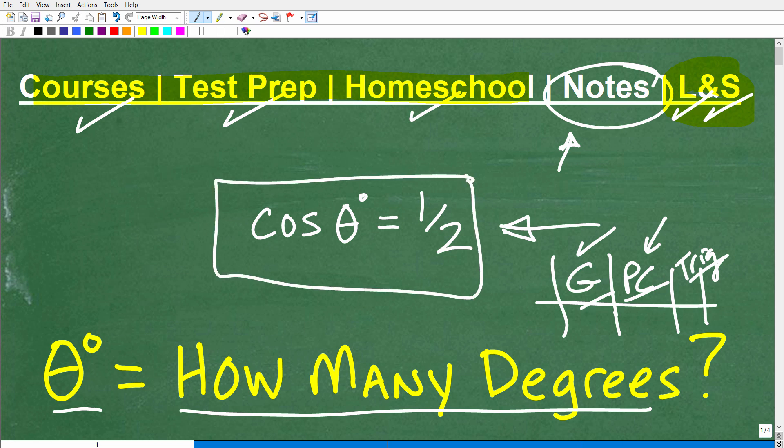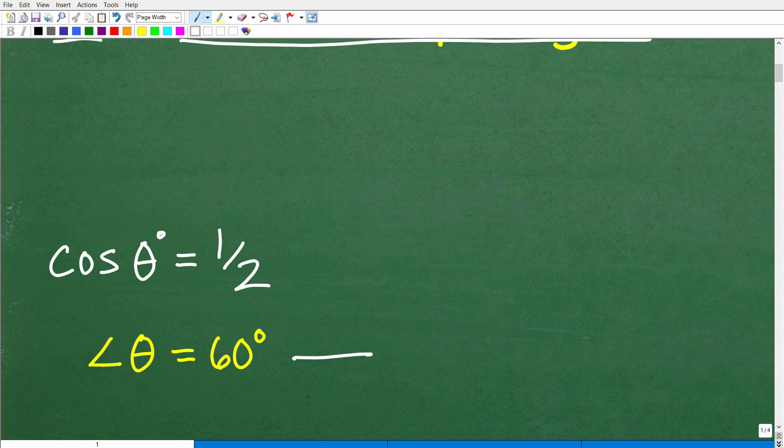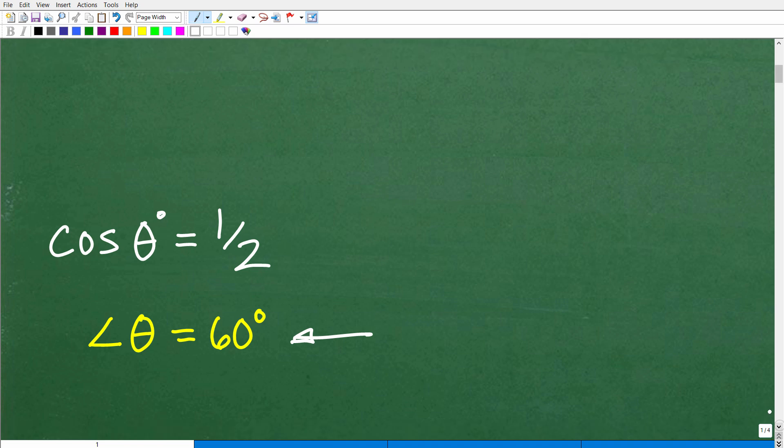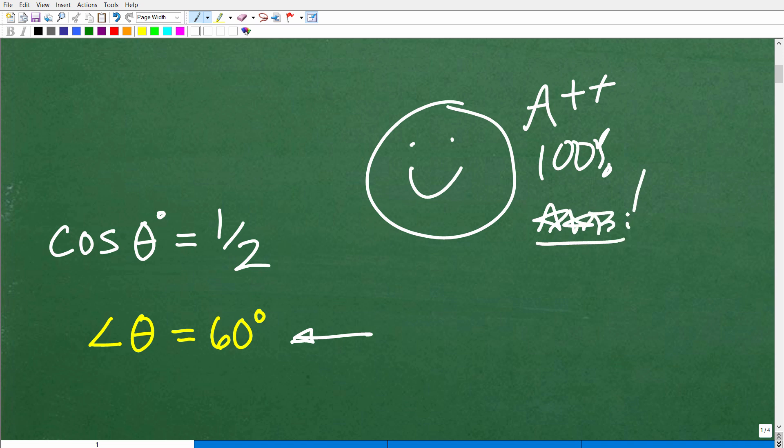Now, okay, so cosine of theta is equal to one-half. What is this angle? How many degrees is this angle theta? Let's go ahead and take a look at it right now. Theta is equal to 60 degrees. So angle theta is equal to 60 degrees. So this was our problem. So how did you do? Now, hopefully, you did this problem both ways, right? You just didn't plug this into your calculator. If you used your calculator only, I'm going to suggest to you that you still need to kind of verify your complete understanding of this topic.